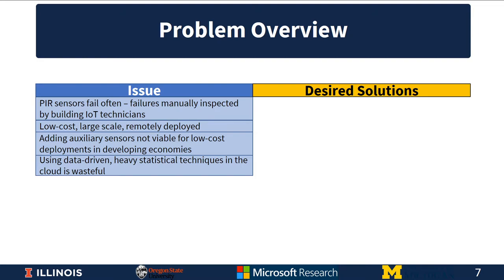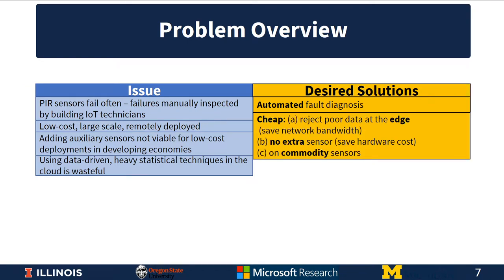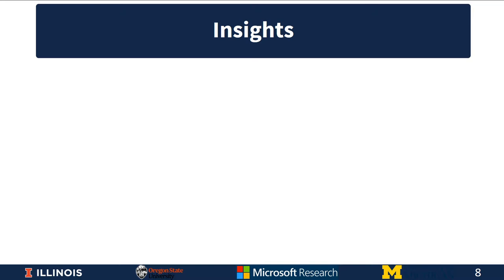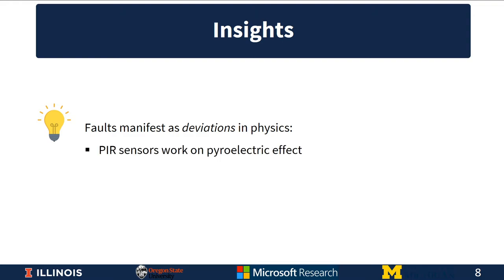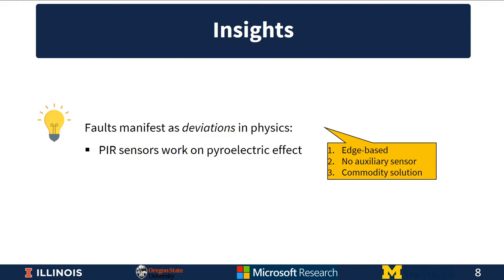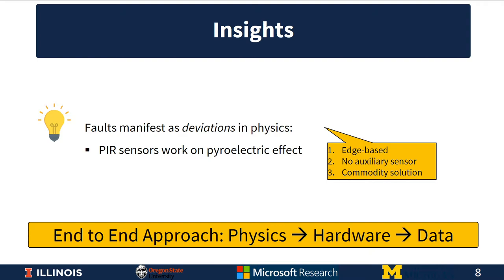What we desire is a completely automated fault diagnosis technique — one that is cheap, rejects poor data at the edge saving network bandwidth, uses no extra sensor saving hardware cost, and can run on commodity sensors. The key insight is that faults manifest as deviations in physics, and PIR sensors work on the physics of the pyroelectric effect. If we can characterize this physical process, we can arrive at an edge-based solution that uses no auxiliary sensor and considers both the physics of the phenomenon, the sensor hardware, and the sensor data itself.